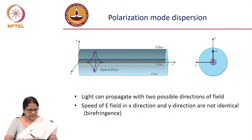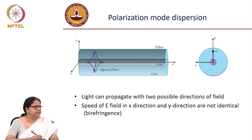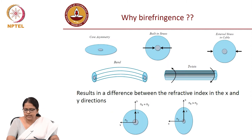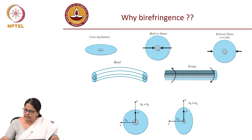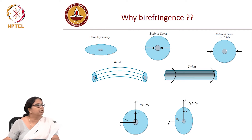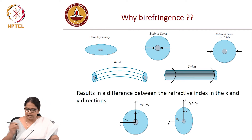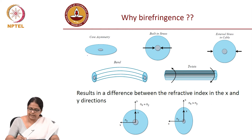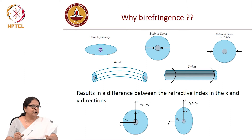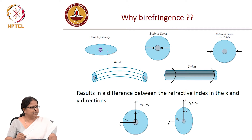However, based on a Corning white paper that is publicly available, even though you intend to make a circular core, you do not actually make a circular core. The fiber drawing process ends up introducing some asymmetry in the core — this is a very exaggerated version of the cross section; in reality there will only be small asymmetries.